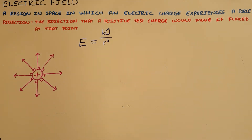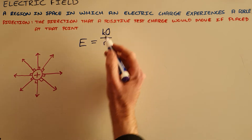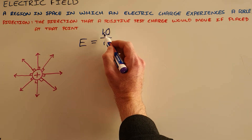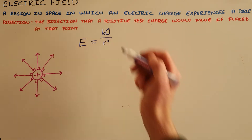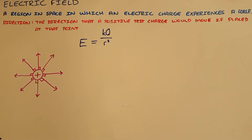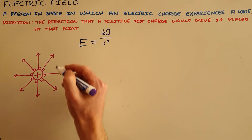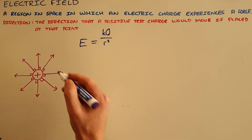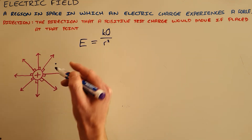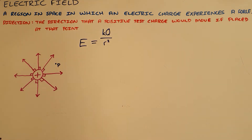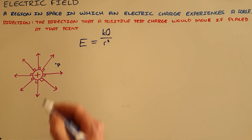The electric field around an object is equal to the product of the constant K multiplied by that charge, divided by the distance at which we are measuring that field squared. As an example, we could calculate the electric field at point P.